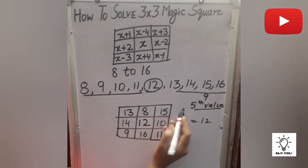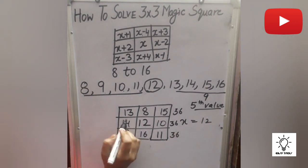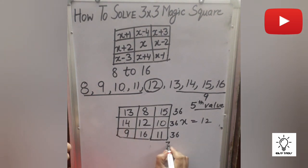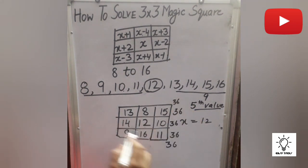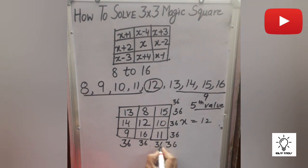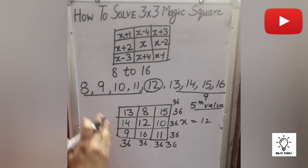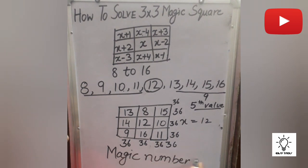When we add these numbers: 13+8+15 = 36. Then 14+12+10 = 36. And 9+16+11 = 36. Diagonally, 13+12+11 = 36, and 9+12+15 = 36. Column wise: 12+8 = 20, plus 16 = 36; and 15+10 = 25, plus 11 = 36. So however we add — diagonally, vertically, or horizontally — we always get the same magic number: 36.